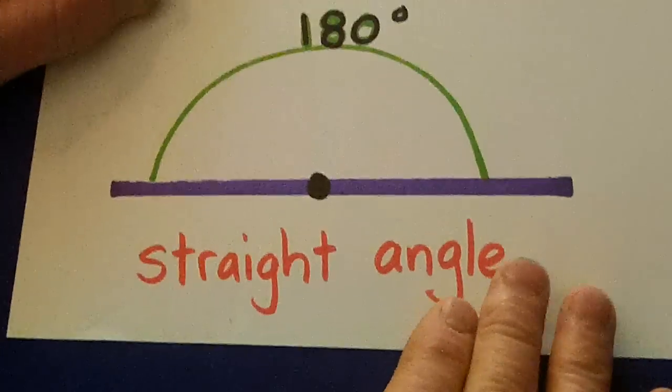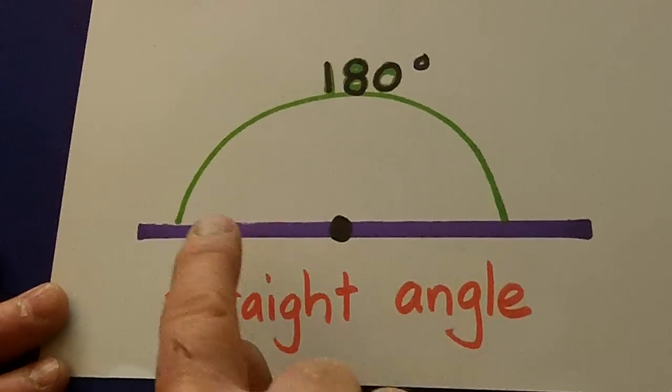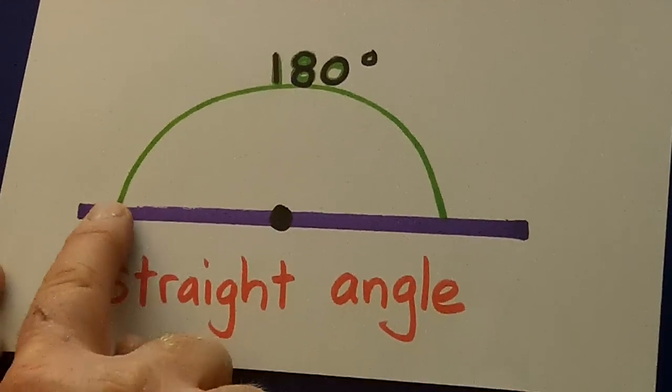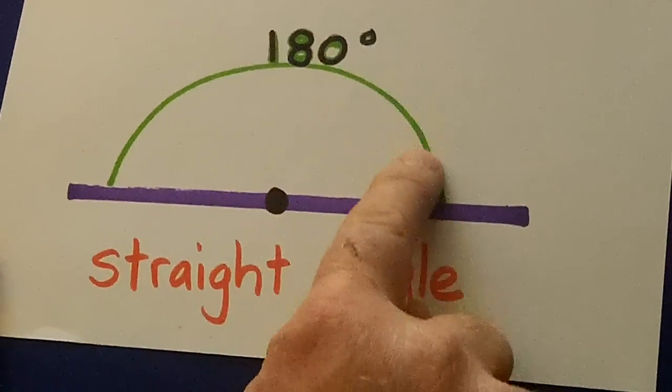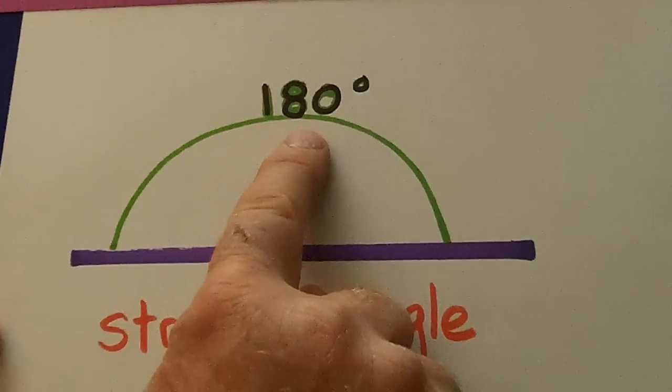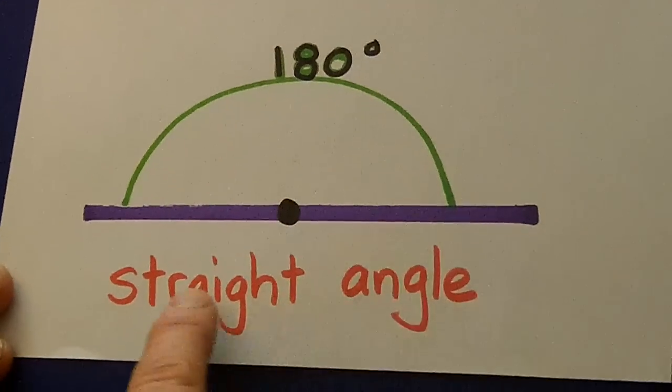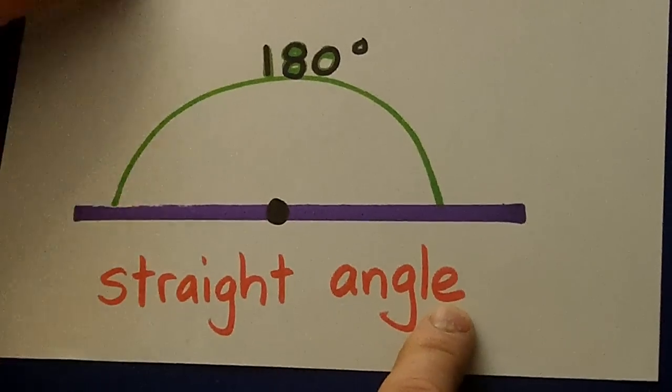The other key angle is lots of kids look at it and go, well, it's just a straight line. But we're concerned about going from here all the way over to there. That's half a circle and it's 180 degrees. And this straight line that makes this angle is called a straight angle.